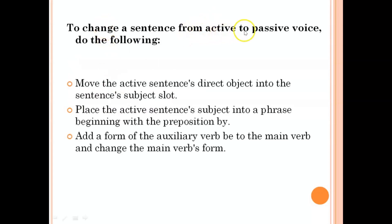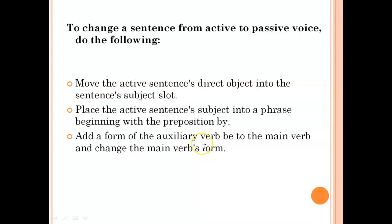To change a sentence from active to passive voice, follow these steps: move the direct object of the active sentence into the subject slot; place the active sentence's subject into a phrase beginning with the preposition 'by'; add a form of the auxiliary verb 'to be'; and change the main verb's form. For example, 'The boy wrote a book' becomes 'The book is written by the boy.'